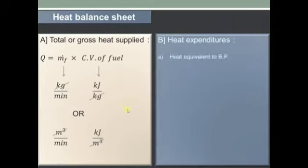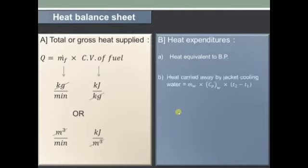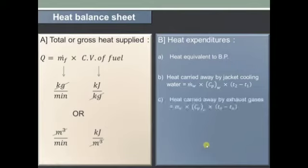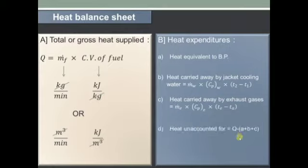Then we will see heat expenditure. The first is the heat equivalent to brake power. The second is heat carried away by jacket cooling water, that is heat carried by the water inside the cooling jackets of the engine. Third is heat carried away by the exhaust gases, that is heat carried from the silencer of the vehicle which goes to the atmosphere. The last is heat unaccounted for, that is total heat supplied minus the sum of all three heat expenditures — Q minus (A plus B plus C).